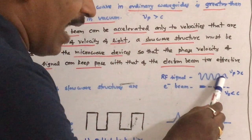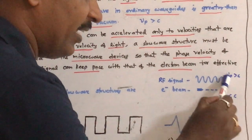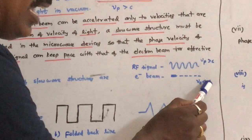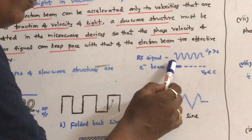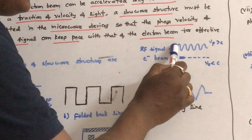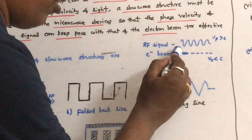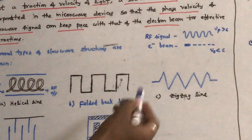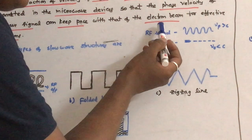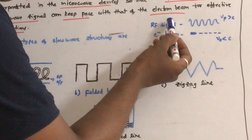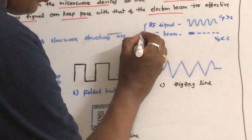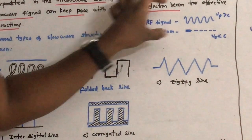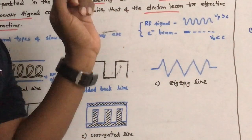This is the RF signal which is to be amplified — it has a phase velocity much greater than the velocity of light, whereas the electron beam velocity is much less than c. The electron beam cannot be accelerated to the velocity of the RF signal. Therefore, with the help of slow wave structures, they will reduce this velocity of RF signals so that there will be an effective interaction between this RF signal and the electron beam, and maximum energy of the electron beam is transferred to the RF signal. This is the mechanism used in slow wave structures.